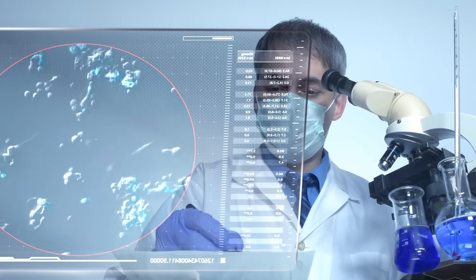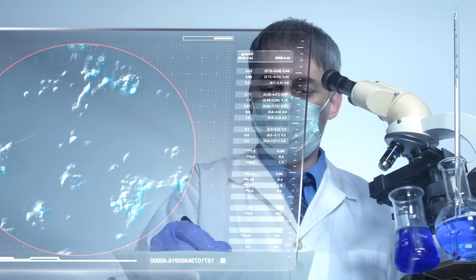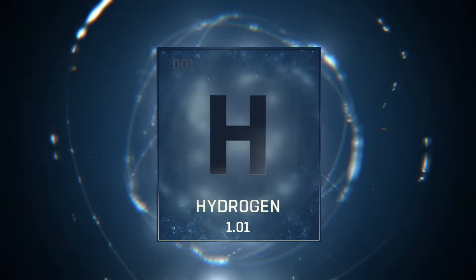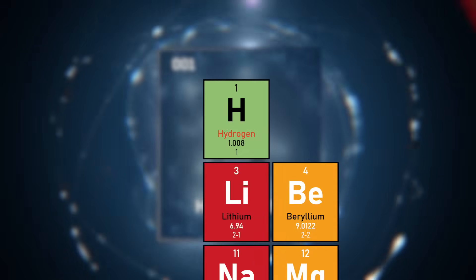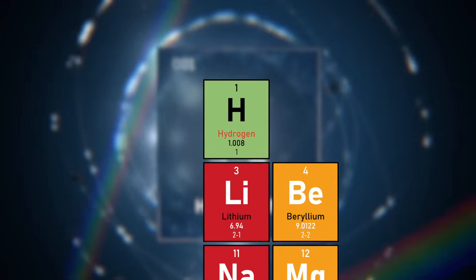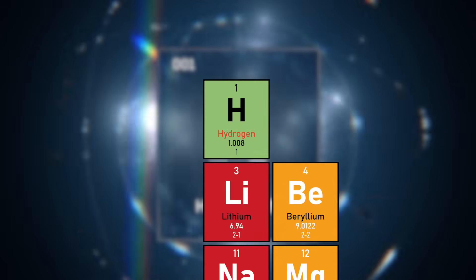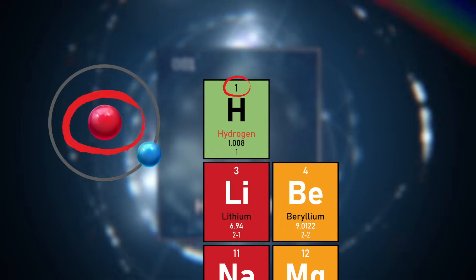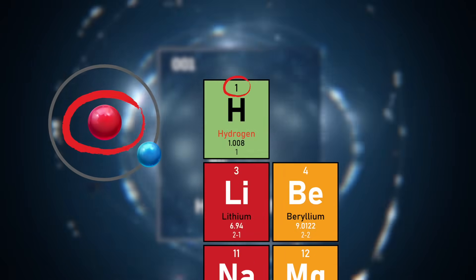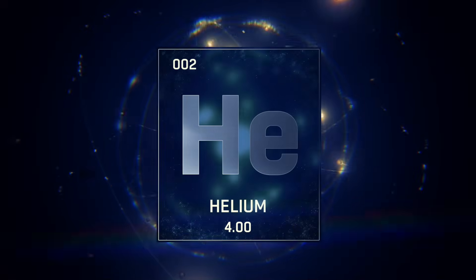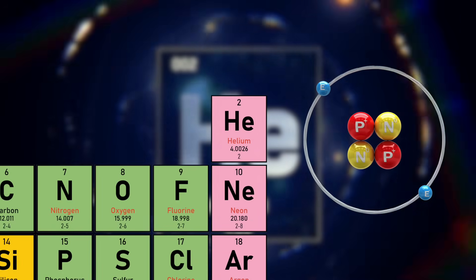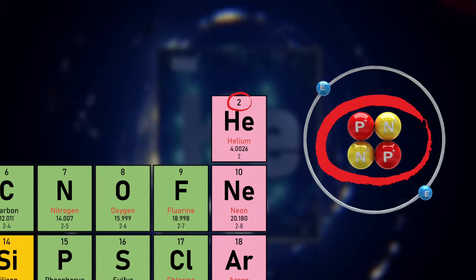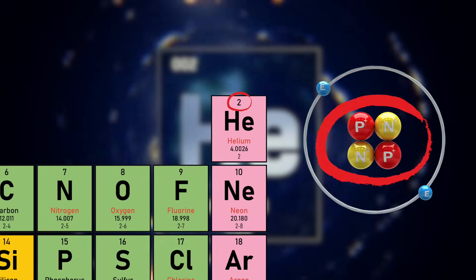Take hydrogen for example. Hydrogen is the first element listed on the periodic table because it has just one proton. And next on that same row you will find helium, which contains two protons.